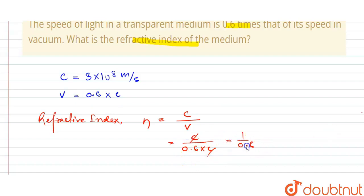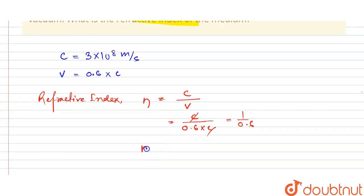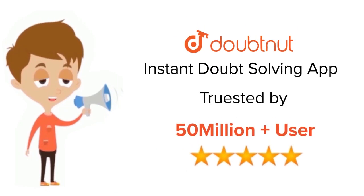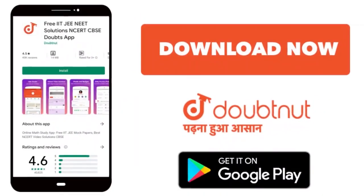Now the refractive index will be 1.67, which is the answer. Thank you. For class 6 to 12, IIT-JEE and NEET level, trusted by more than 5 crore students. Download DoubtNet app today.